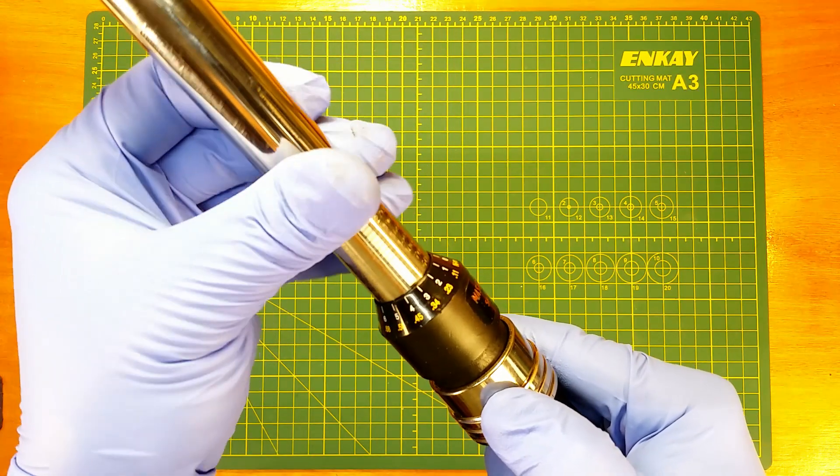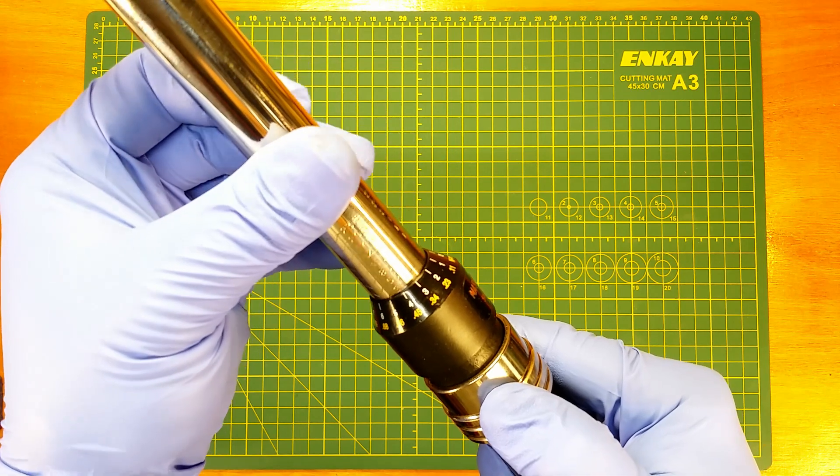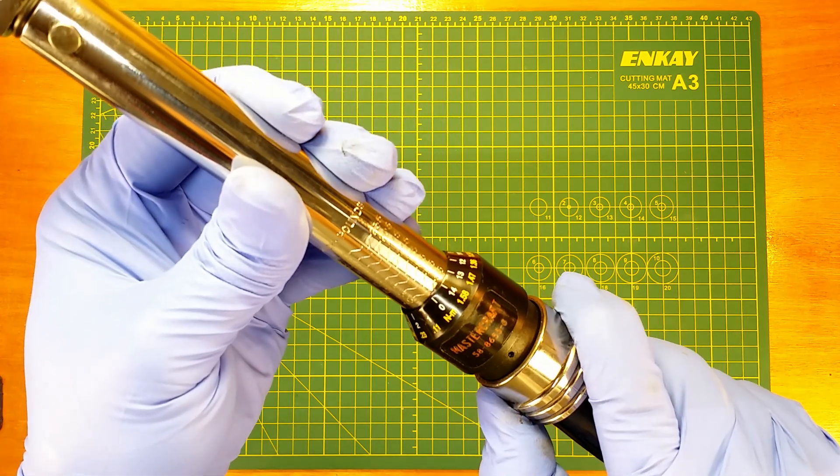When you are done using the wrench, don't forget to set lowest torque value to relieve the tension on the mechanism.